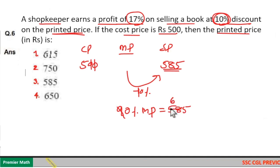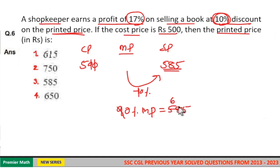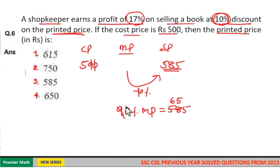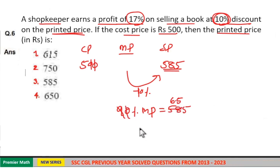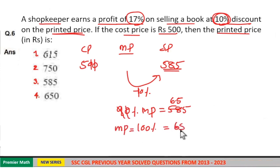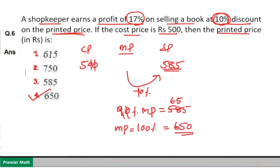Dividing: 9 goes 6 times into 54, remaining 4; 9 goes 5 times into 45. So 10% is 65, meaning 1% is 6.5, and 100% — the marked price — is ₹650. So option 4 is the answer.